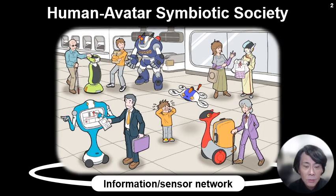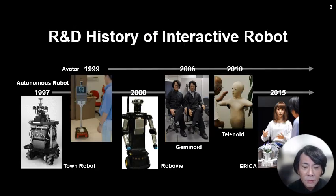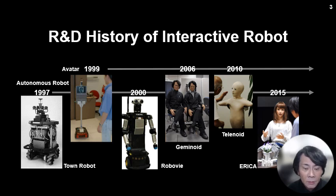This is my dream. I have studied my robot and avatar project around the year 2000, and my goal is to realize this human-avatar symbiotic society. This is my R&D history for interactive robots. I'm always developing both autonomous robots, computer agents, and teleoperated robots and computer agents — that is, avatars.